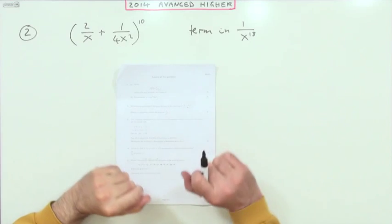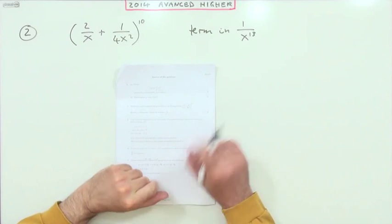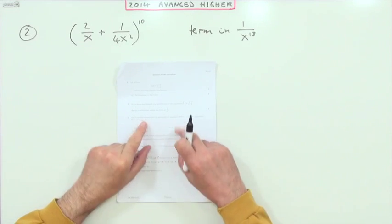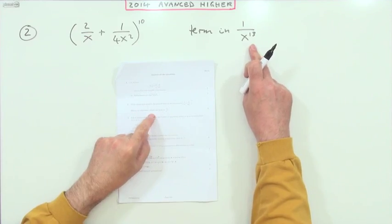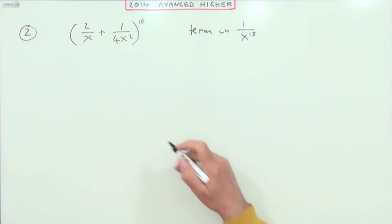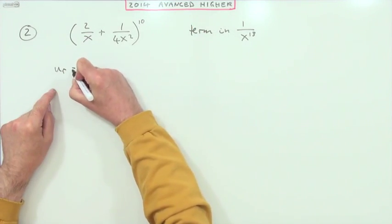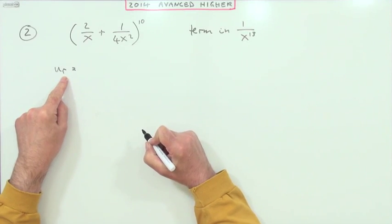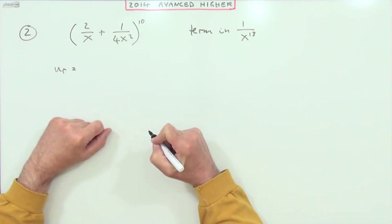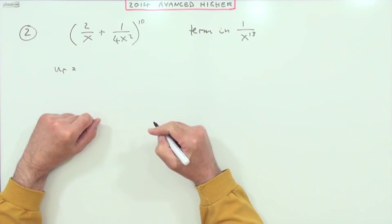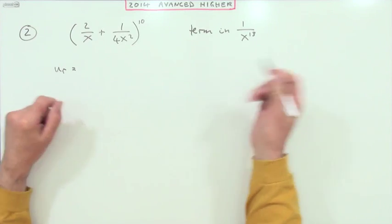Number two, from the 2014 advanced higher binomial expansion, five marks. Obtain a particular term by first getting the general term. Let's call the general term U_r where r is a number that goes from zero to ten. So U_0 is the first term and U_1 is the second term, but it's not asking for the position of the terms, only what is the term.